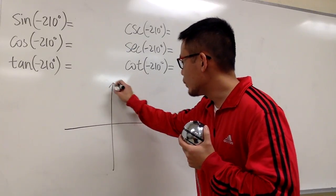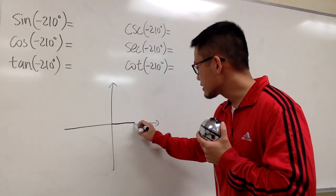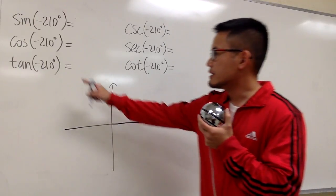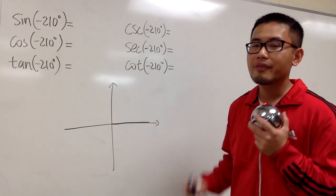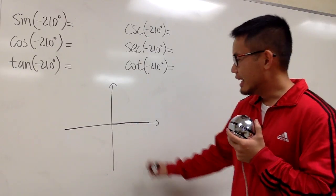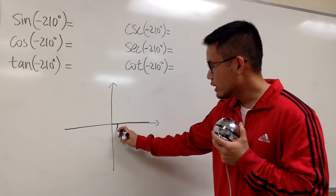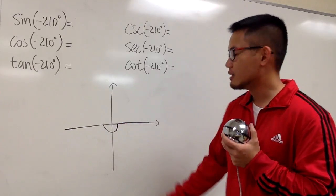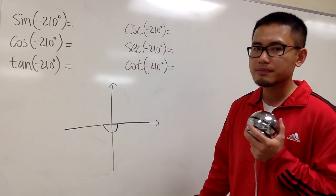Draw the x-axis and the y-axis, and start from the positive x-axis right here. This time the angle is negative 210 degrees, which means we have to turn backwards. And keep track carefully. Let's go from here to here — remember, this is 180 degrees backwards, so technically this is negative 180 degrees.